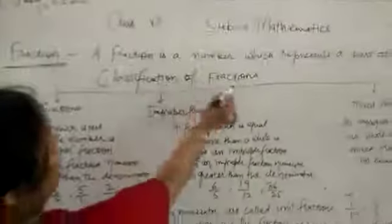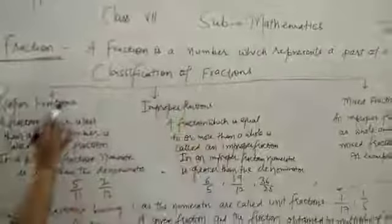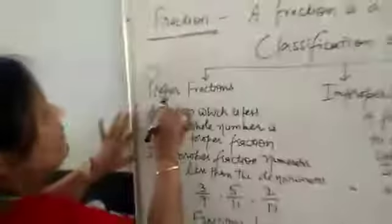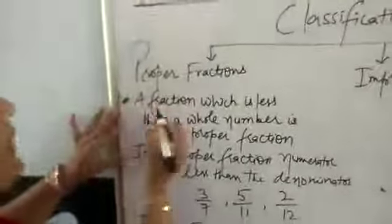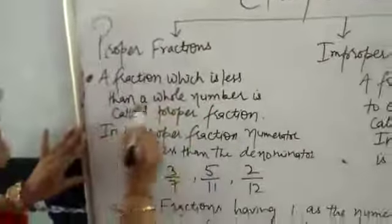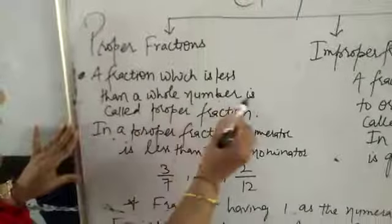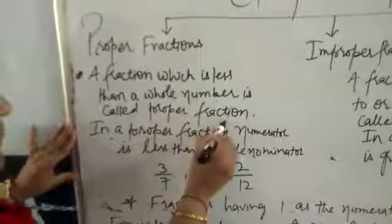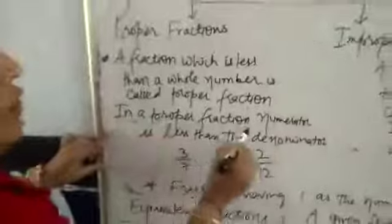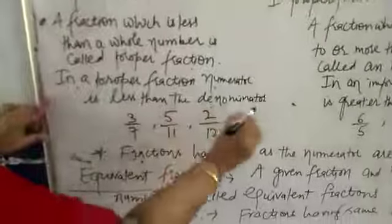Now let us classify fractions. Classification of fractions — there are 3 types: proper fractions, improper fractions, and mixed fractions. First of all, we concentrate on proper fractions. A fraction which is less than a whole number is called a proper fraction. In a proper fraction, the numerator is less than the denominator.